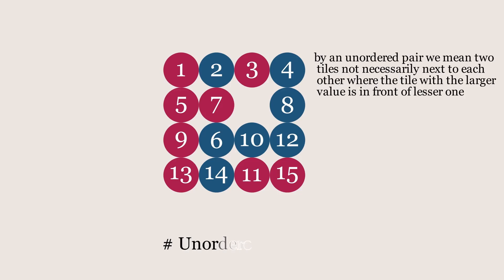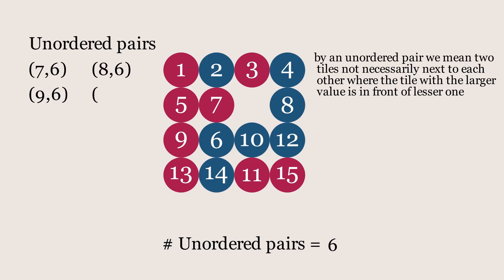In the example shown, there are 6 unordered pairs: the pairs of tiles numbered 7 and 6, 8 and 6, and 9 and 6, along with the tiles numbered 12 and 11, 13 and 11, and 14 and 11. We will keep track of the unordered pairs on the left for the time being.